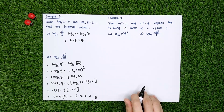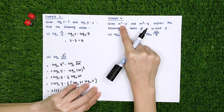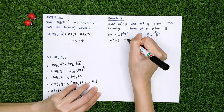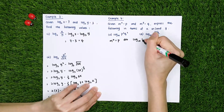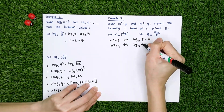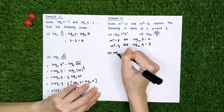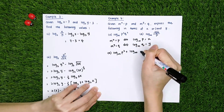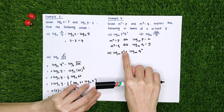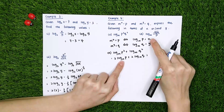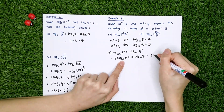Example 4: given m^x = p and m^y = q, express the following in terms of x or y. First, convert to logarithm form: log_m(p) = x and log_m(q) = y. Part A: log_m(p^3 · q^2). Apply the first law and move powers to the front: 3·log_m(p) + 2·log_m(q) = 3x + 2y.